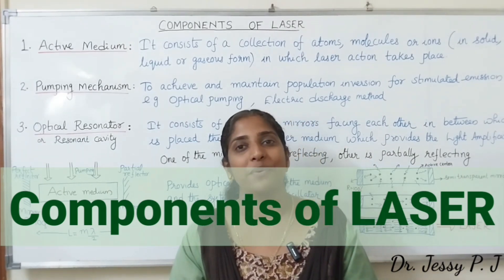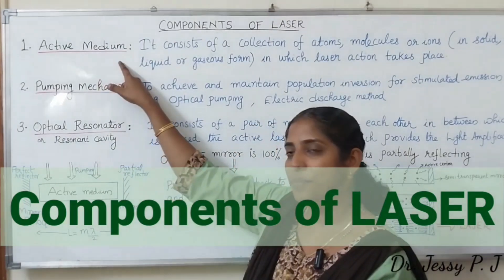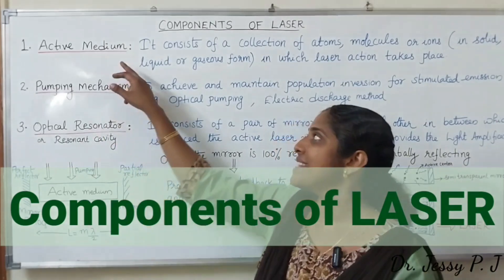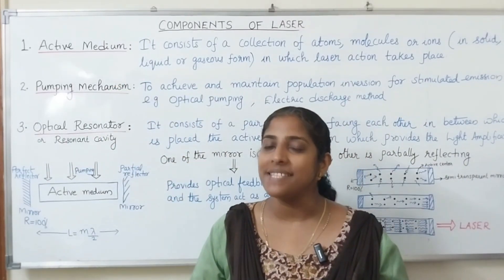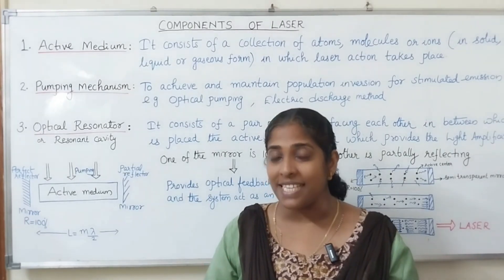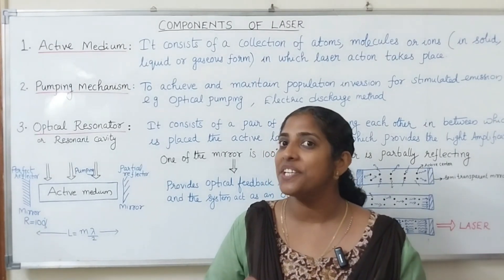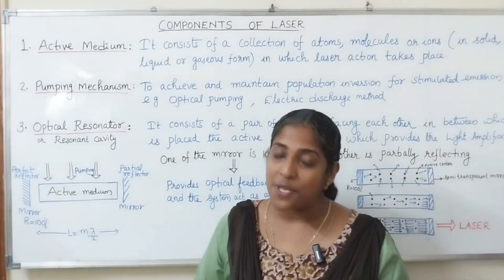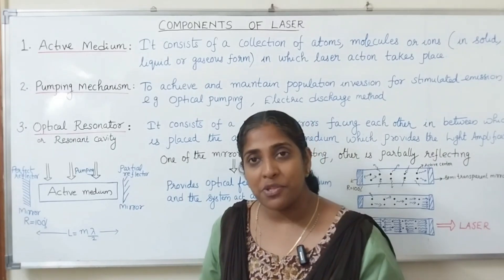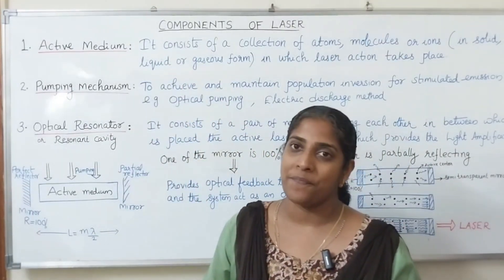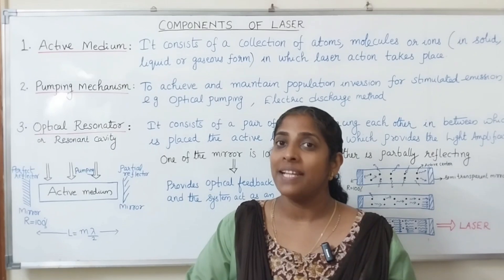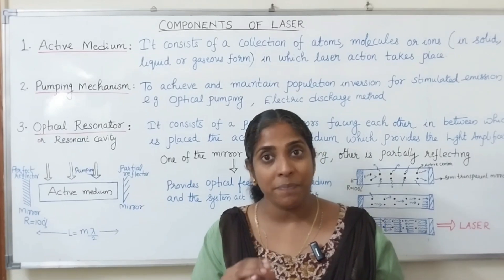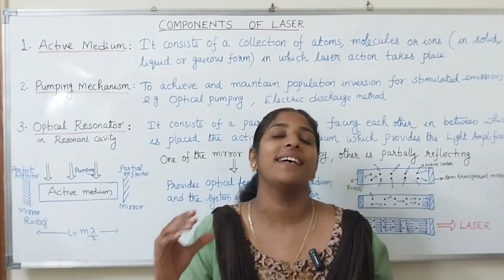The main components required for a laser are: one is active medium, next is pumping mechanism, and third one is optical resonator. The active medium is the material in which the laser action takes place. It consists of a collection of atoms, molecules, or ions that can be in the solid form, liquid form, or gaseous form. The active medium must be a medium with a metastable state.